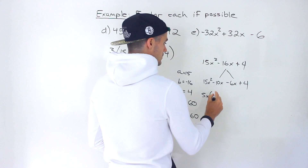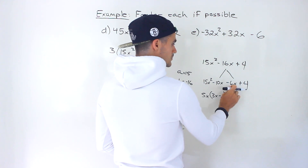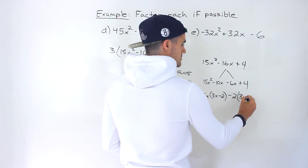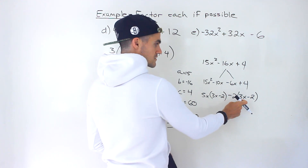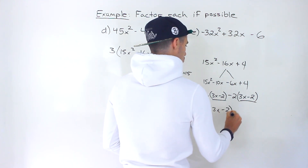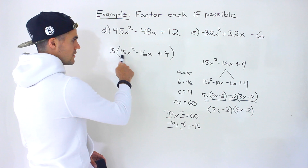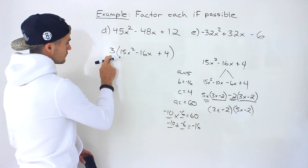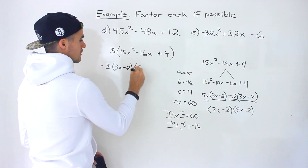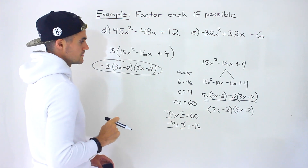From the first pair take out 5x, leaving 3x minus 2. From the second pair there's a negative, so take out negative 2, also leaving 3x minus 2. Take out the common factor 3x minus 2, leaving 5x minus 2. So the bracket factors into (3x minus 2)(5x minus 2). But don't forget the 3 we factored out initially — the final factored form is 3(3x minus 2)(5x minus 2).